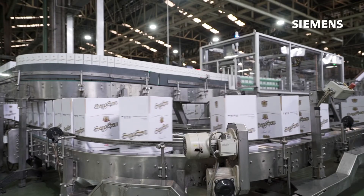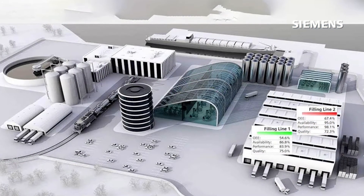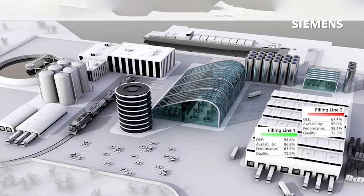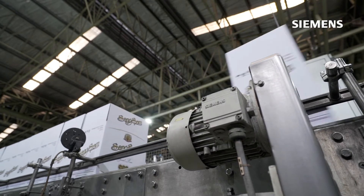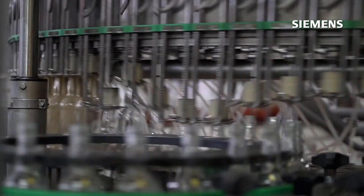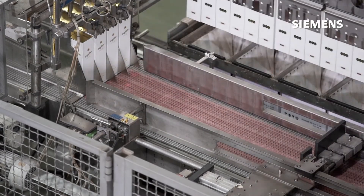OEE is a result of three factors: availability, performance, and quality. Availability tells you how long your machine or line was actually producing out of the scheduled production time. Performance tells you about the rate or speed at which your machines were producing in comparison with the theoretical or design speed. Quality tells you how many good pieces and how many bad pieces were produced. So OEE gives you greater insight into why your machines or lines are not producing as you expect them to.